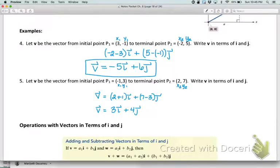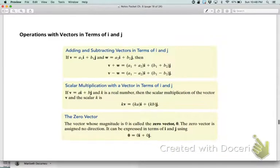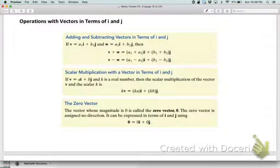The last thing is that since these can be written as position vectors in terms of i and j, it makes some operations with vectors really easy. Here's a few things we want to know. If you want to add two vectors together, you simply add their components. So if I want to add v and w,